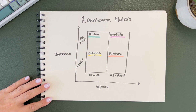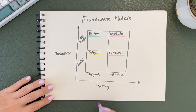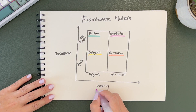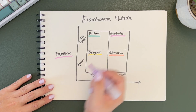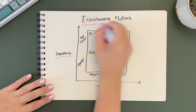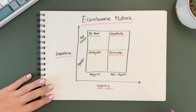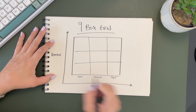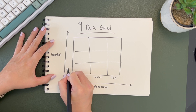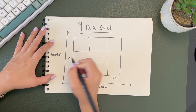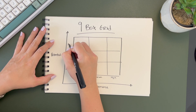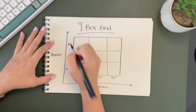Number two, the Eisenhower matrix, which takes into consideration the importance and urgency of tasks to help you prioritize your to-do list. Number three, the nine box grid, which helps companies evaluate their talent pool based on performance and potential of their staff.